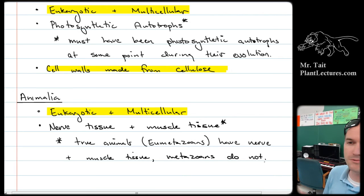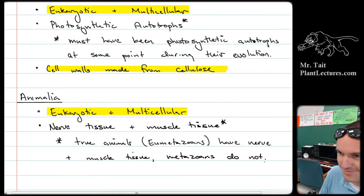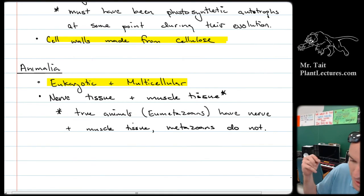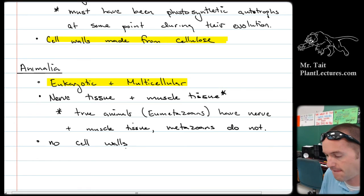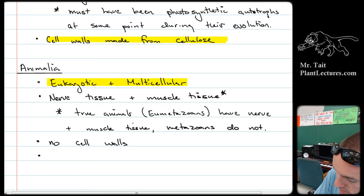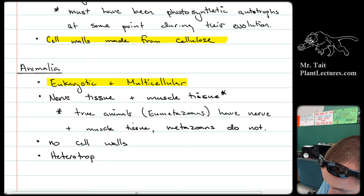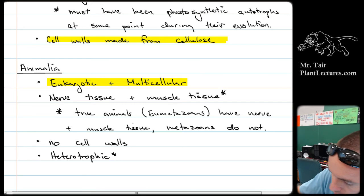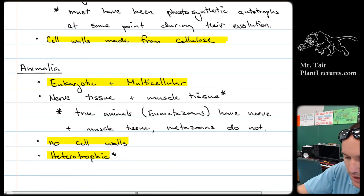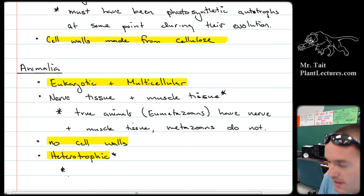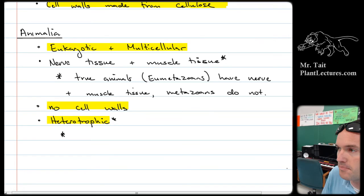Why haven't sponges been moved? Because we're definitely going to make a new kingdom system with more kingdoms and find a better place for them — that's been going on for about 15 years now. Animals also have no cell wall and must be heterotrophic, with an asterisk. The asterisk is that they can be heterotrophic as well as something else; they just have to be heterotrophs as their main form of nutrition.